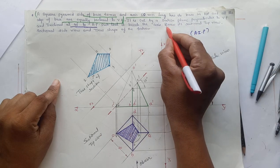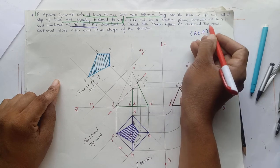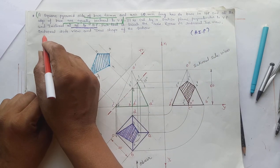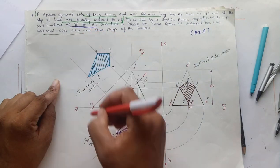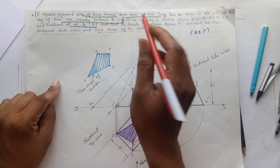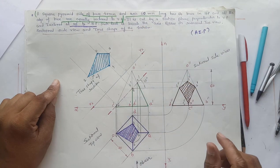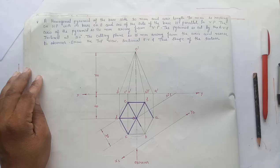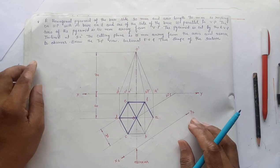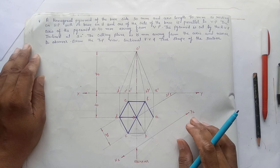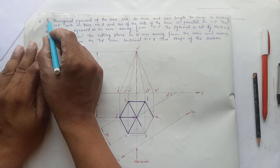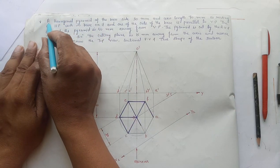This will be the true shape of the section. We have now drawn: section top view, section side view, and true shape of the section. Now let us do another problem.